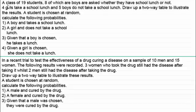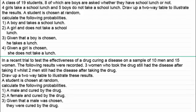You might want to pause the video after I've run through some of these ideas and tackle the second example. So for this first example we've got a class of 19 students, eight of which are boys, and they're asked whether they have school lunch or not. Something like this can be represented in what we call a two-way table.